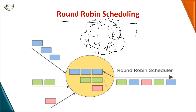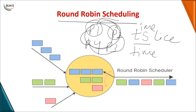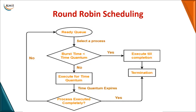The amount of time the CPU is allocated to a particular process is called a time slice or time quantum. Each process will be allotted the CPU for this fixed amount of time. Initially, the process will be in the ready queue; you select the process and check its burst time against the time quantum.